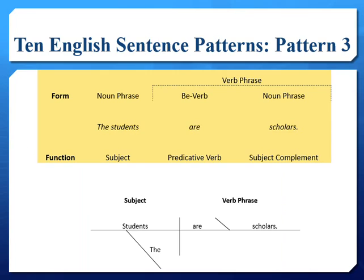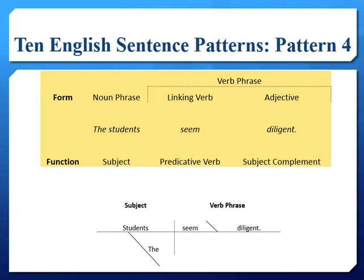Just as in sentence pattern two, the subject complement in sentence pattern three is a noun that describes or renames the subject. Sentences of pattern four differ from sentences of pattern three in that the verbs in pattern four are not be verbs but linking verbs. Though be verbs can be substituted for linking verbs without much change in meaning, a linking verb differs from be verbs because linking verbs convey the senses such as smell, feel, sound, and look, as well as the assertion of presumptions such as using the linking verb 'seem.'